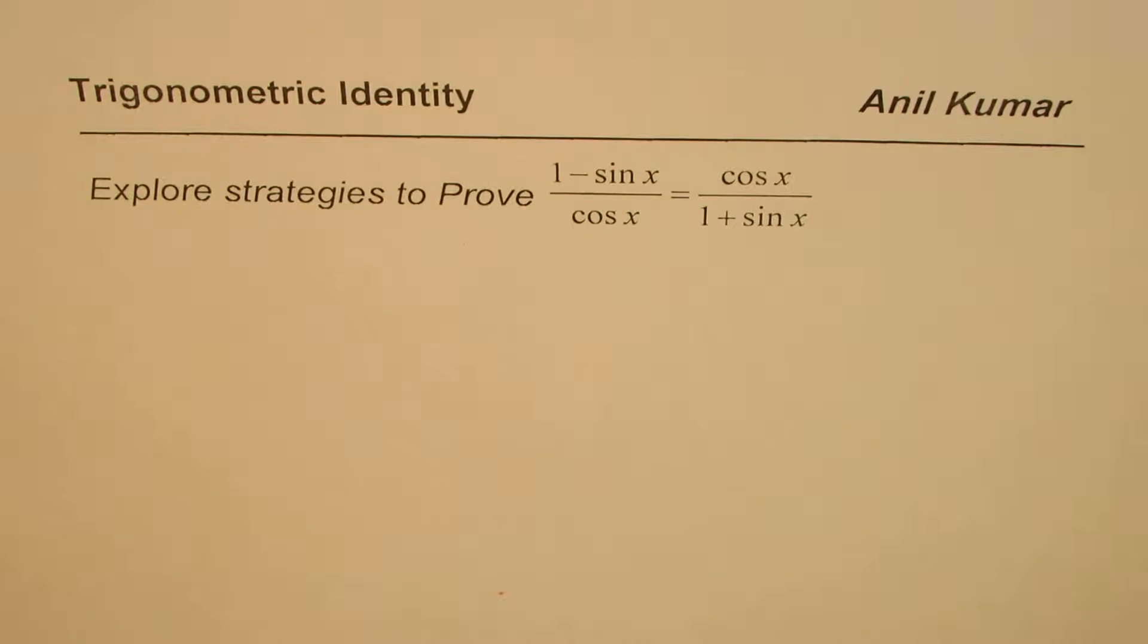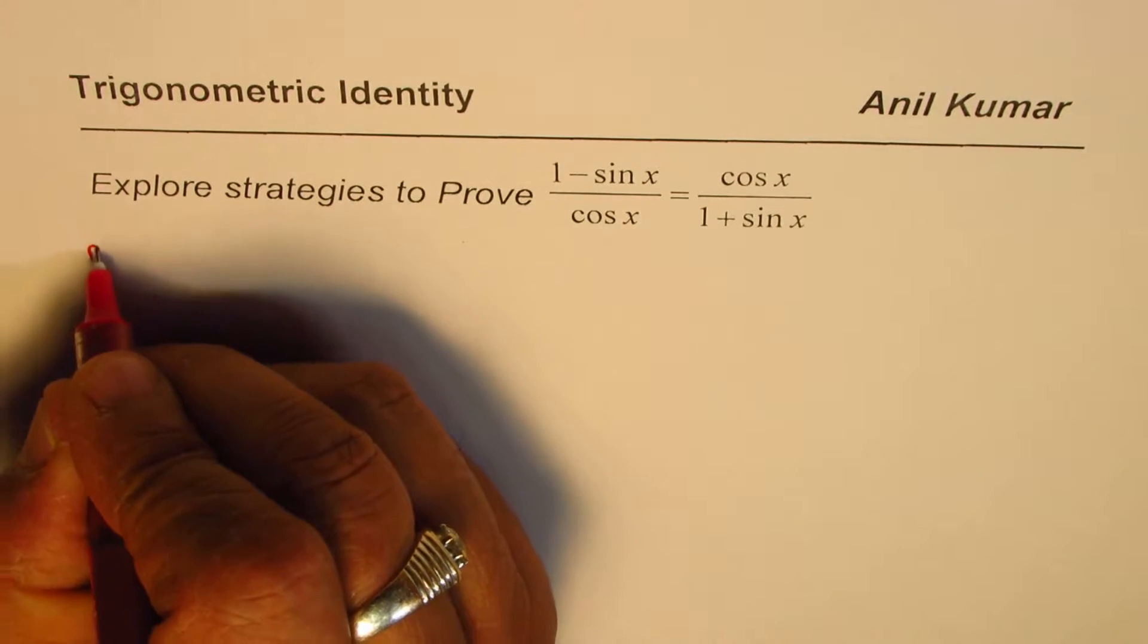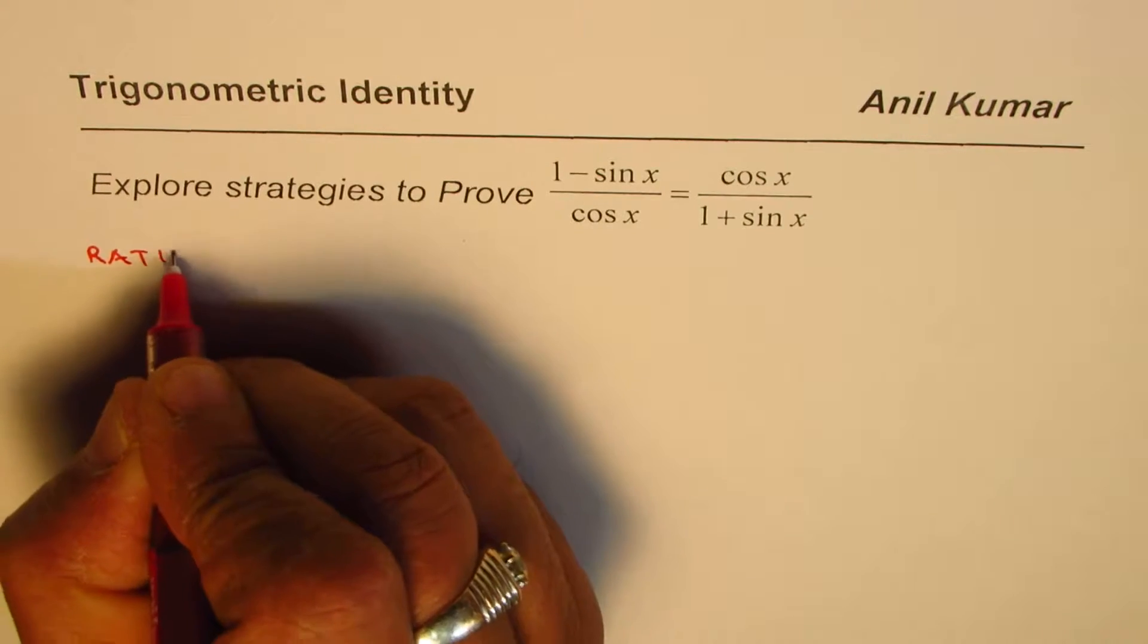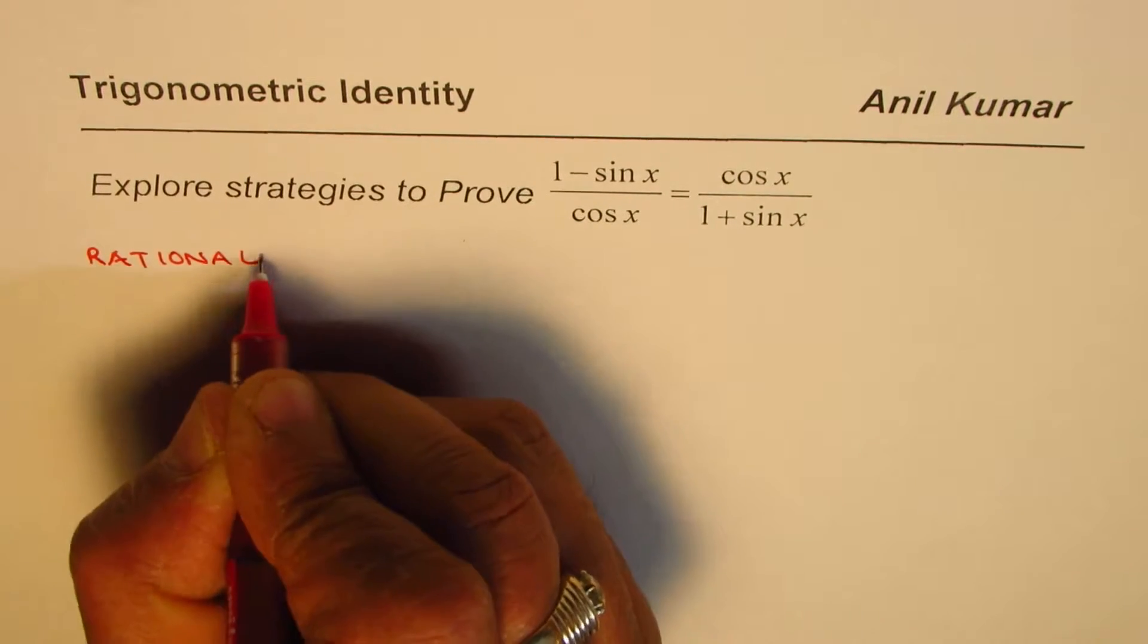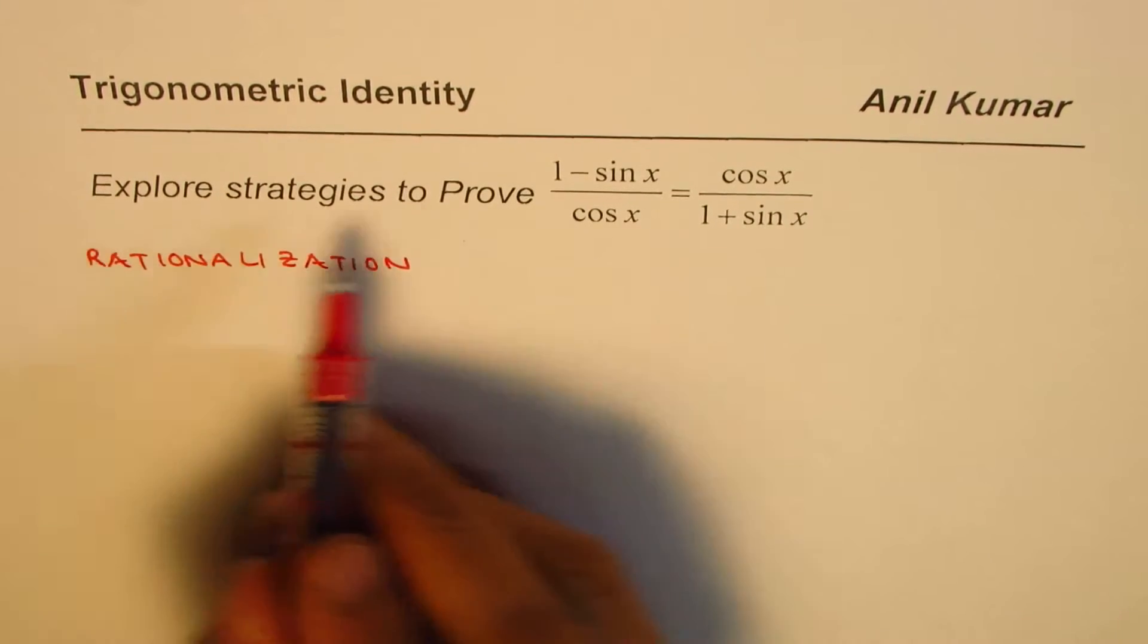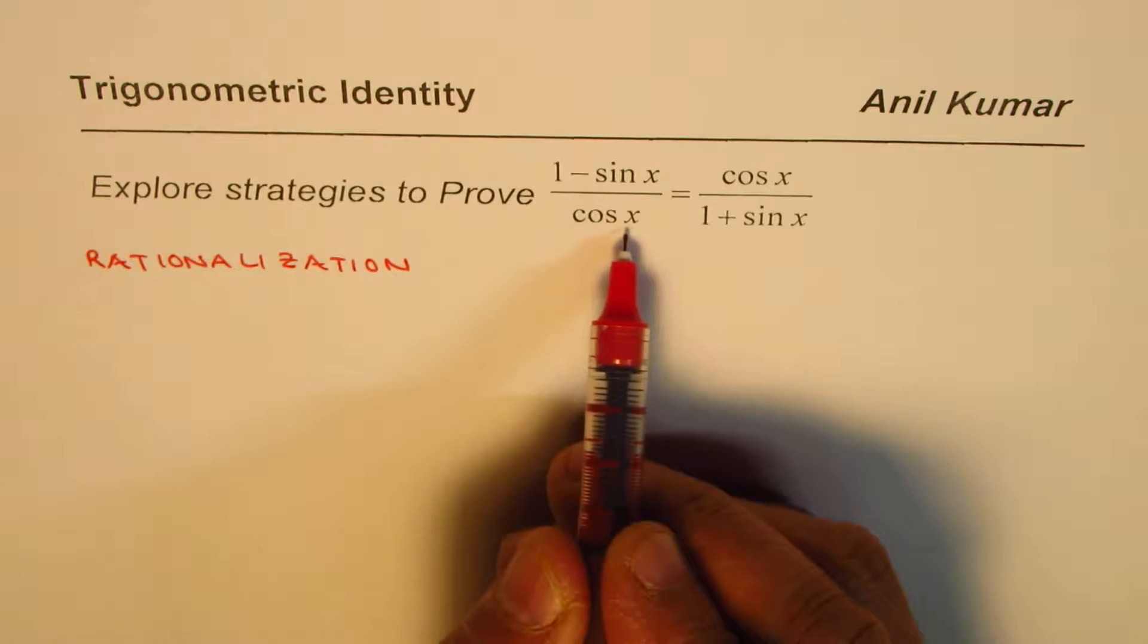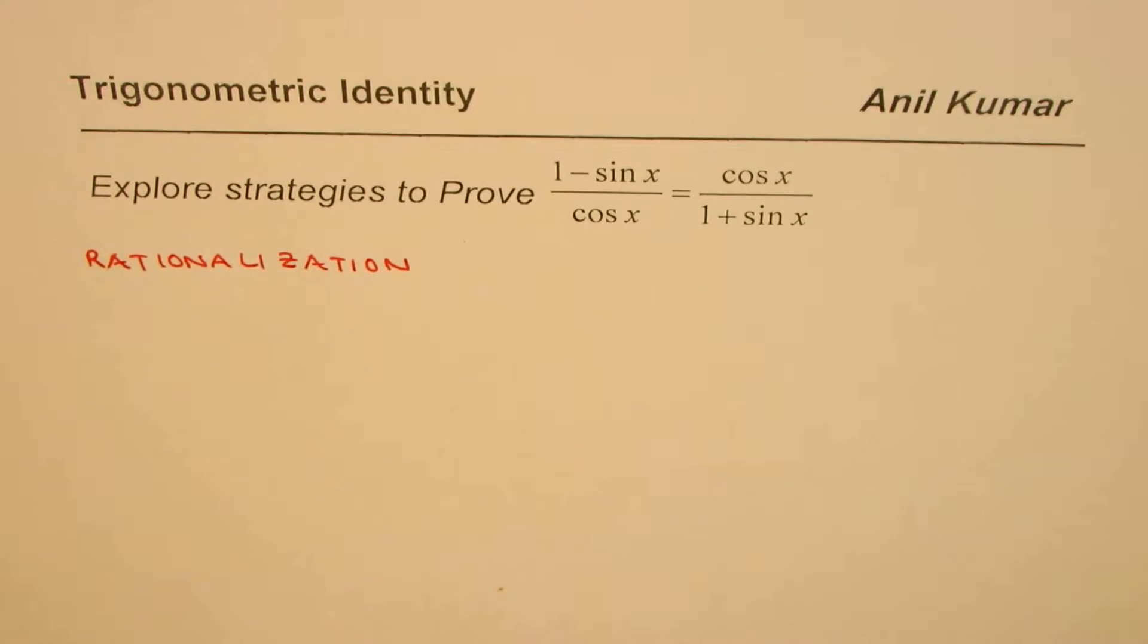I'm Anil Kumar. In this video we'll understand another strategy to prove trigonometric identities, and we call that strategy rationalization. The question before us is: explore strategies to prove (1 - sin x)/cos x = cos x/(1 + sin x).